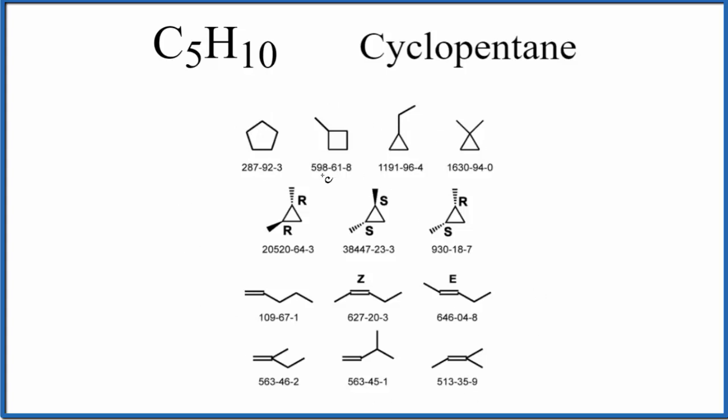These are the different ways you could arrange the carbons and hydrogens into a valid structure. Right here, this is our cyclopentane. Pentane means five, so we have five carbon atoms, and ends in -ane, they're going to be single bonded. And then cyclo means we'll have a ring. So here's our cyclopentane.